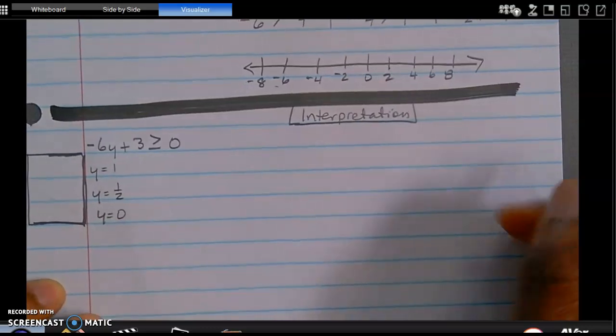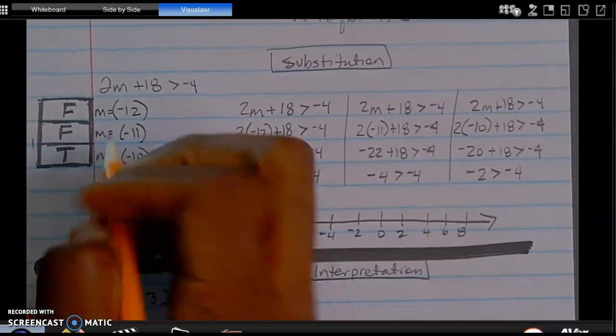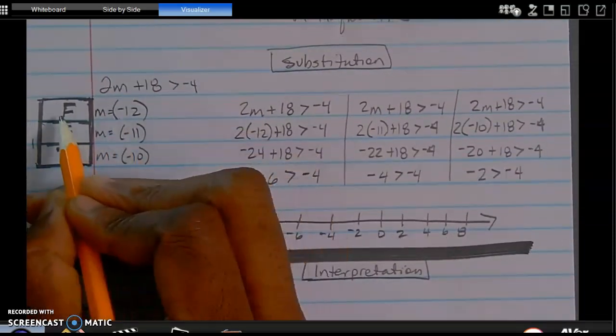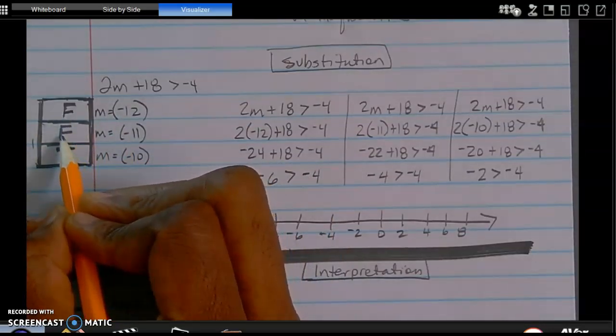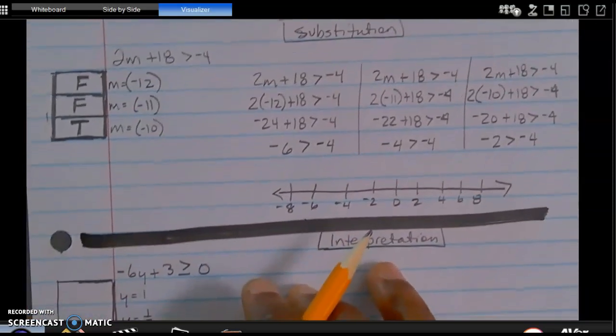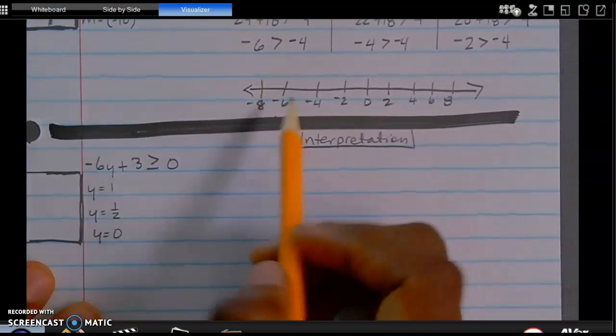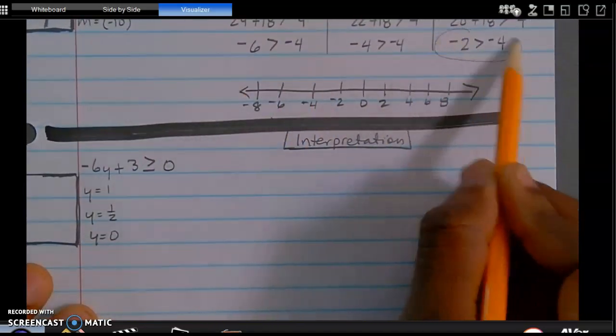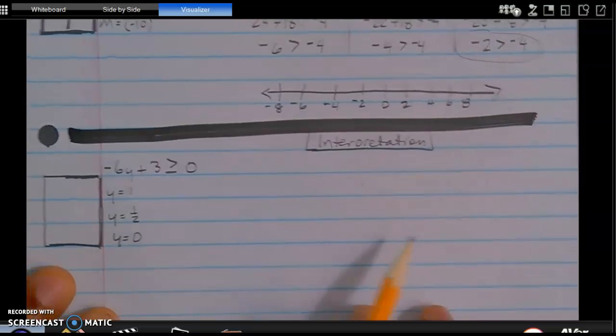That's using the substitution method. So as you saw with my previous work, you know that negative 12 would be a false statement. That is not going to make it correct. Negative 11 is also a false statement. That's going to make it incorrect. And then negative 10 is the only true statement. So as you saw there at the bottom, the only one that is valid is this one.